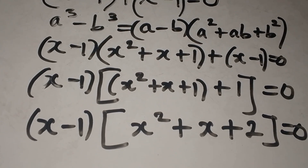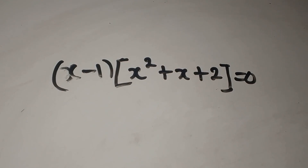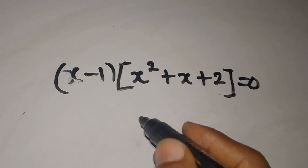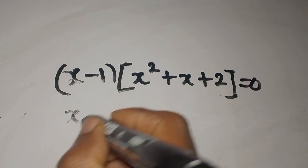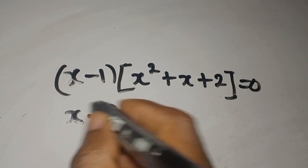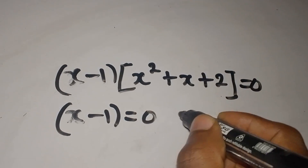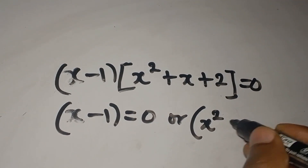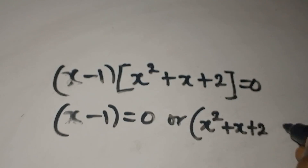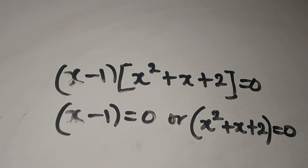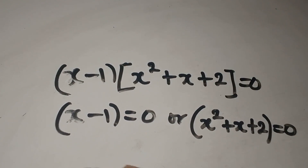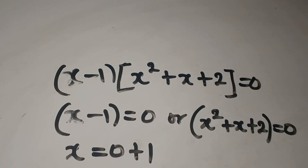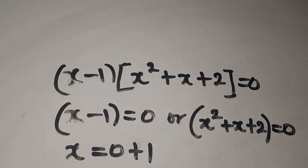Since we are multiplying two expressions to get zero, either of them must equal zero. So x minus 1 equals 0, or x squared plus x plus 2 equals 0. From the first, x equals 1, which is one of our solutions.